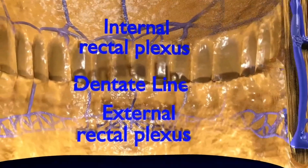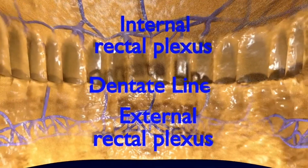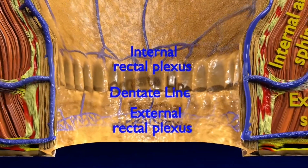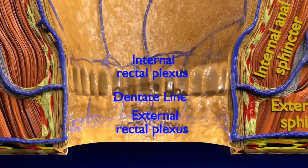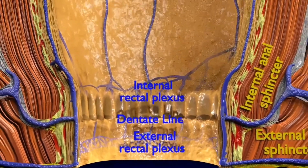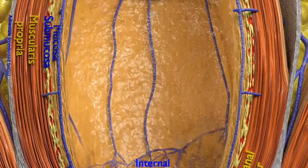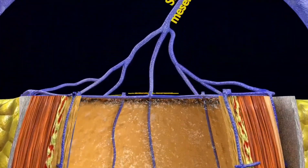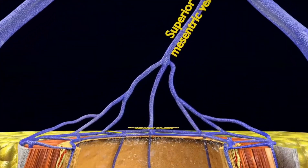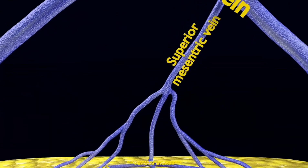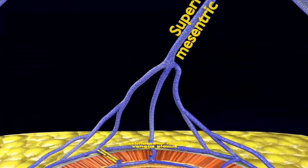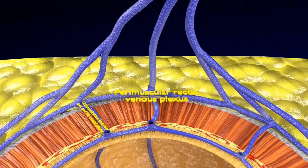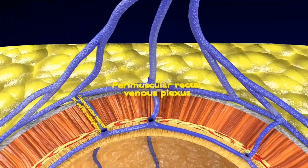The dentate line is a line which divides the upper two-thirds and the lower third of the anal canal. Developmentally, this line represents the hindgut-ectoderm junction. The superior, middle, and inferior rectal veins pierce the rectal walls to form the peri-muscular rectal venous plexus.